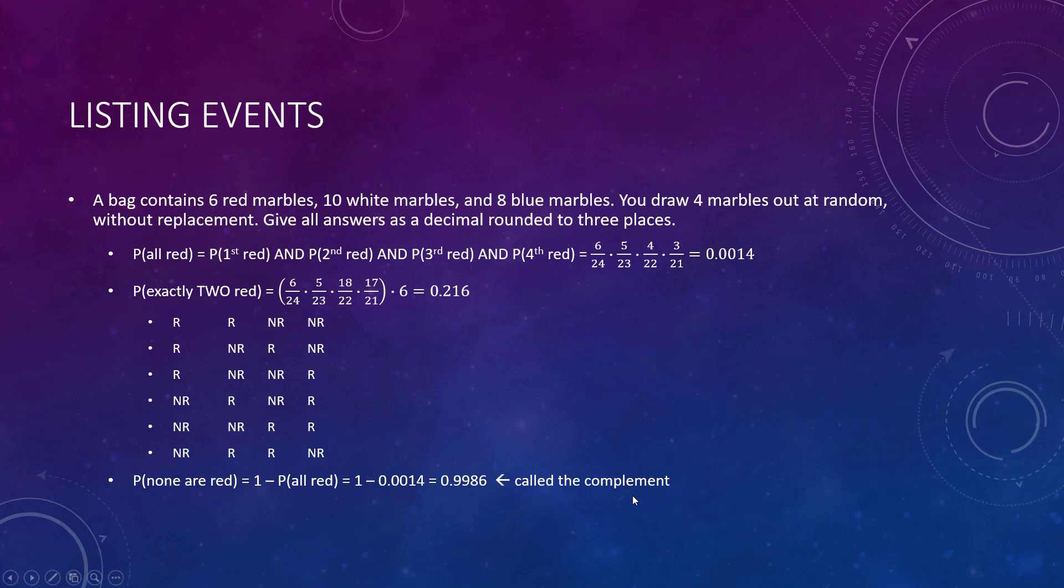Probability none are red - you really want to learn the complement. Not like 'hey you're looking really good today,' not that kind of compliment. All probabilities must add to one. Think of something simple: you flip a coin, what are the two things that can happen? Heads and tails. Half the time heads, half the time tails. What's one half plus one half? One. Sometimes you might have to add a hundred probabilities, or you could do one minus the one probability. What's the probability none are red? Why not take one minus the probability all were red?